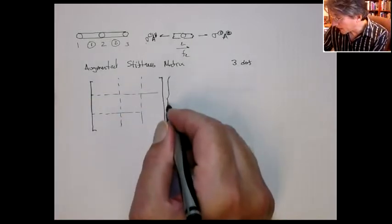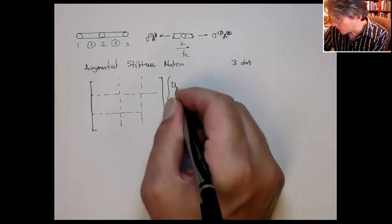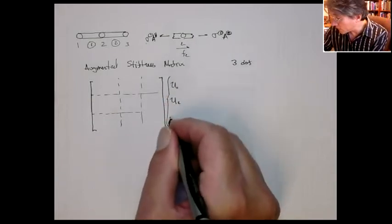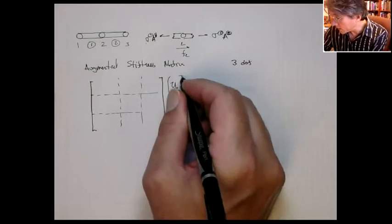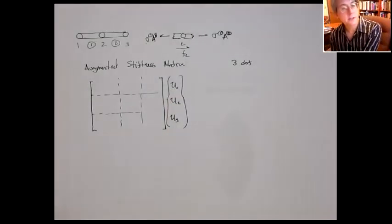And it gets multiplied by the nodal unknowns, U1, U2, and U3. And that's going to equal the external forces F1, F2, and F3.